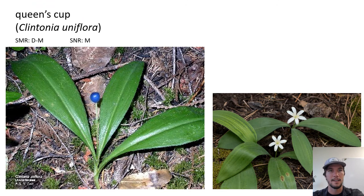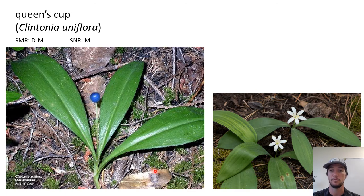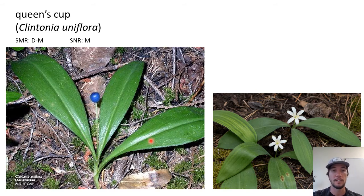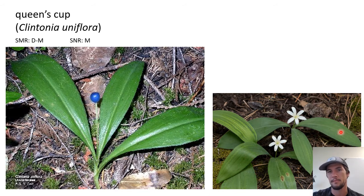Next up: Clintonia uniflora — queen's cup. This is a scientific name I love because it tells you exactly what to look for: uniflora means single-flowered. This is a really distinctive plant because it only produces a single flower and single fruit. It produces two or three really elongated leaves with parallel veins, though the veins are hard to see — it just looks like a really smooth little leaf. When you find it in the forest it almost looks like somebody's ornamental plant that went wild.